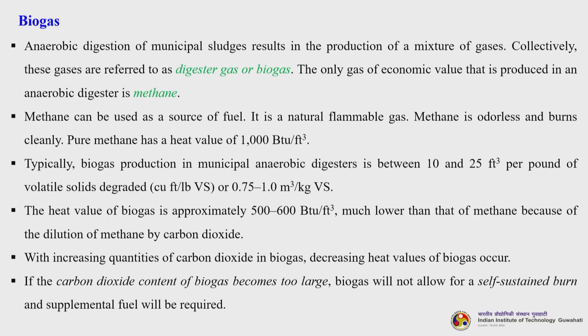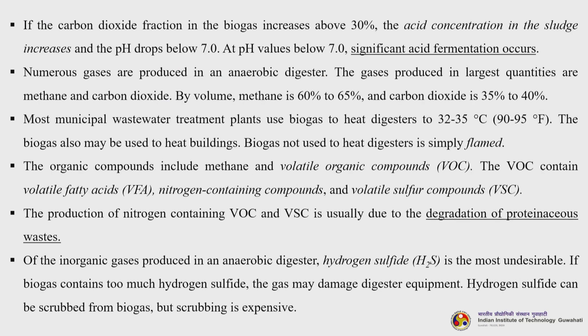If carbon dioxide is too much, biogas will not ignite and you need to have some secondary fuel to do the ignition. If the carbon dioxide fraction in the biogas increases above 30 percent, the acid concentration in the sludge increases and the pH drops below 7. At pH values below 7, significant acid fermentation occurs, which is not good for anaerobic digestion when we are targeting biogas or methane formation.